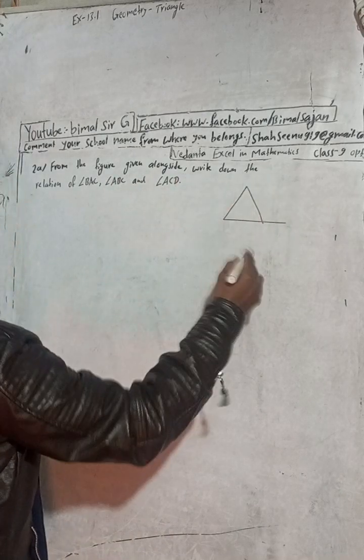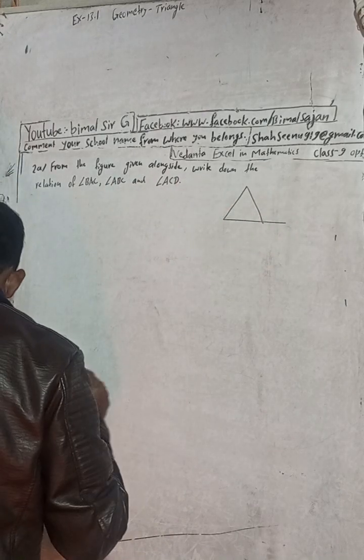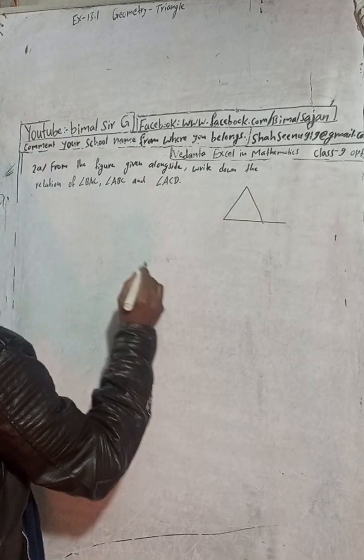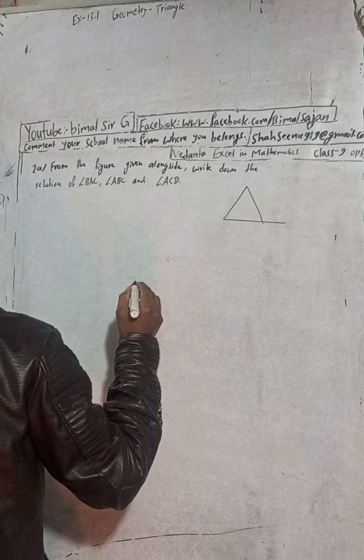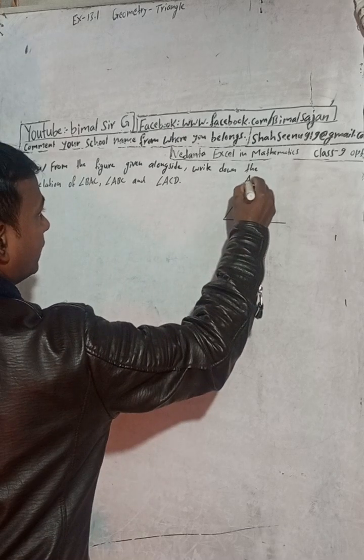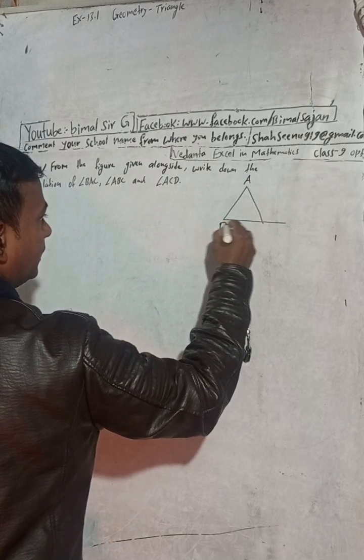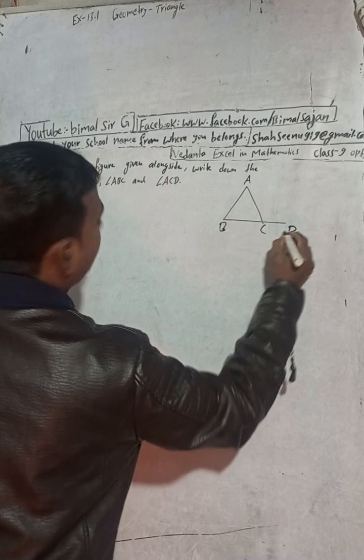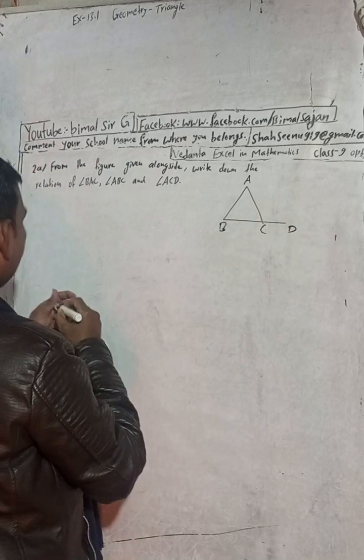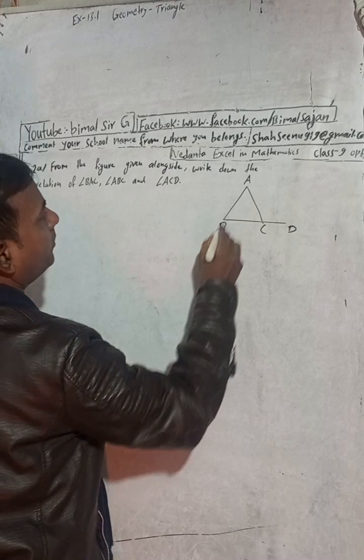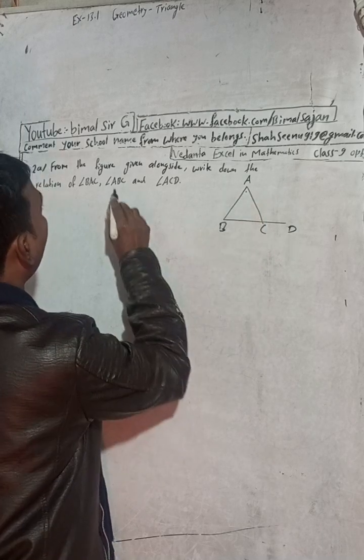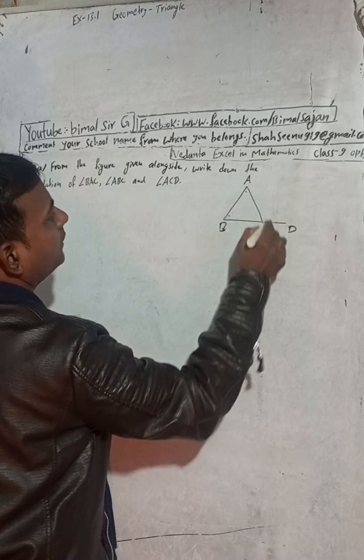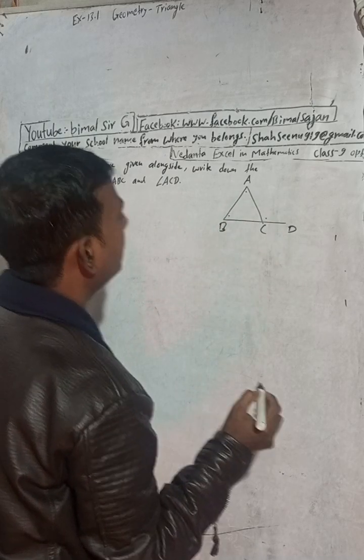Here the question is from the figure given alongside. Write down the relation of angle BAC - they have written ABC and then D. This is the figure. Here is given angle BAC, this angle, angle ABC, this angle, and ACD. What is the relation between these angles?